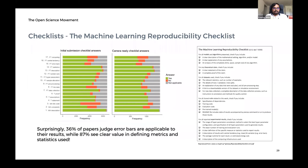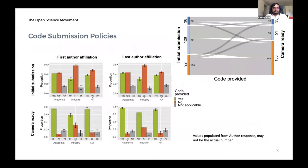One cool and surprising finding from the reproducibility checklist: 36% of papers judged error bars as applicable to their results, while 87% see clear value in defining the metrics and statistics used. If 87% see value in defining metrics, then 87% should also find mentioning error bars applicable. This is where we need to improve as a community — we need much more stringent statistical validity of our models.